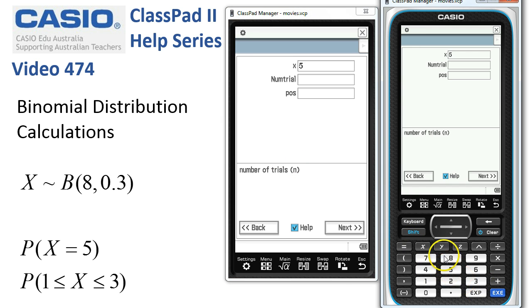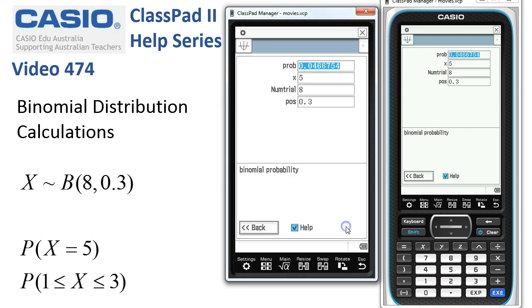The number of trials is 8 and the probability of success is 0.3. So when we tap onto next, the probability is calculated, about 4.66 percent.